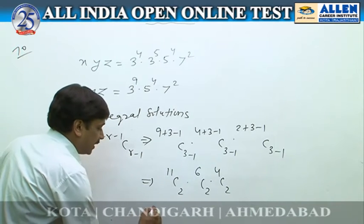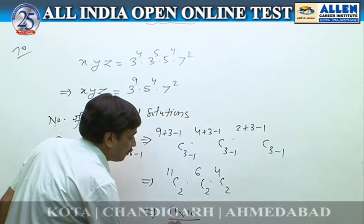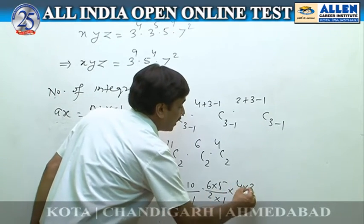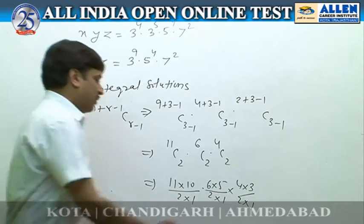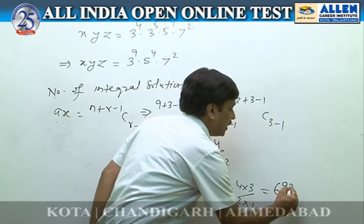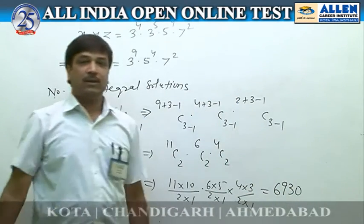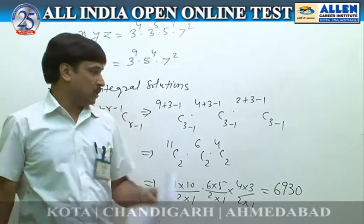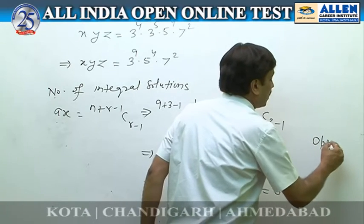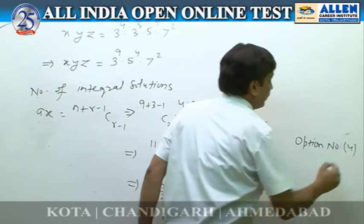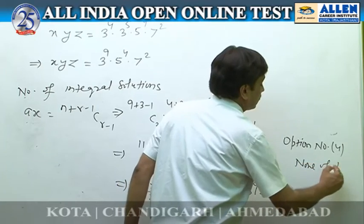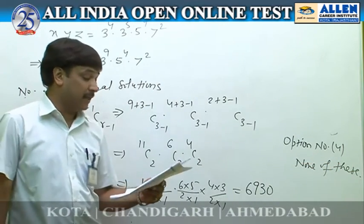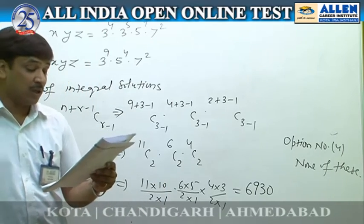Simplifying: 11C2 = (11×10)/(2×1), 6C2 = (6×5)/(2×1), 4C2 = (4×3)/(2×1). After solving, the number of solutions is 6,930. According to the given options, there is no option with 6,930, so option number 4 — none of these — is correct.